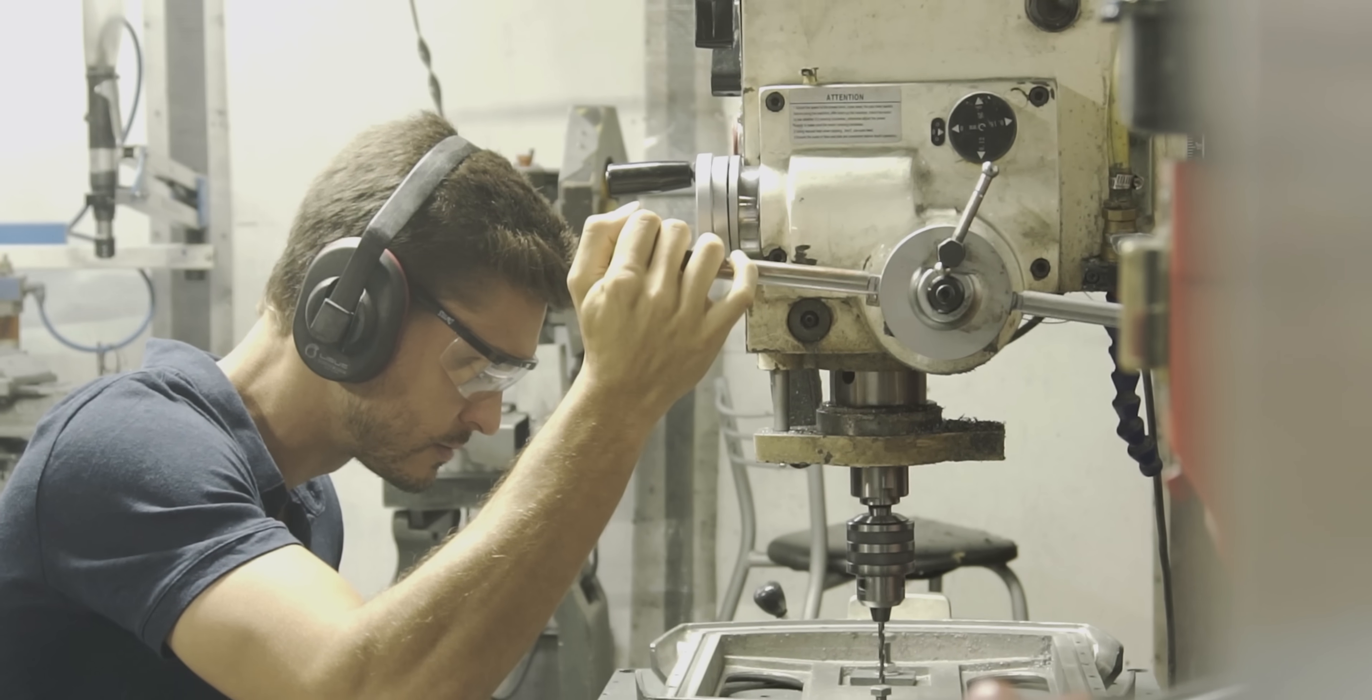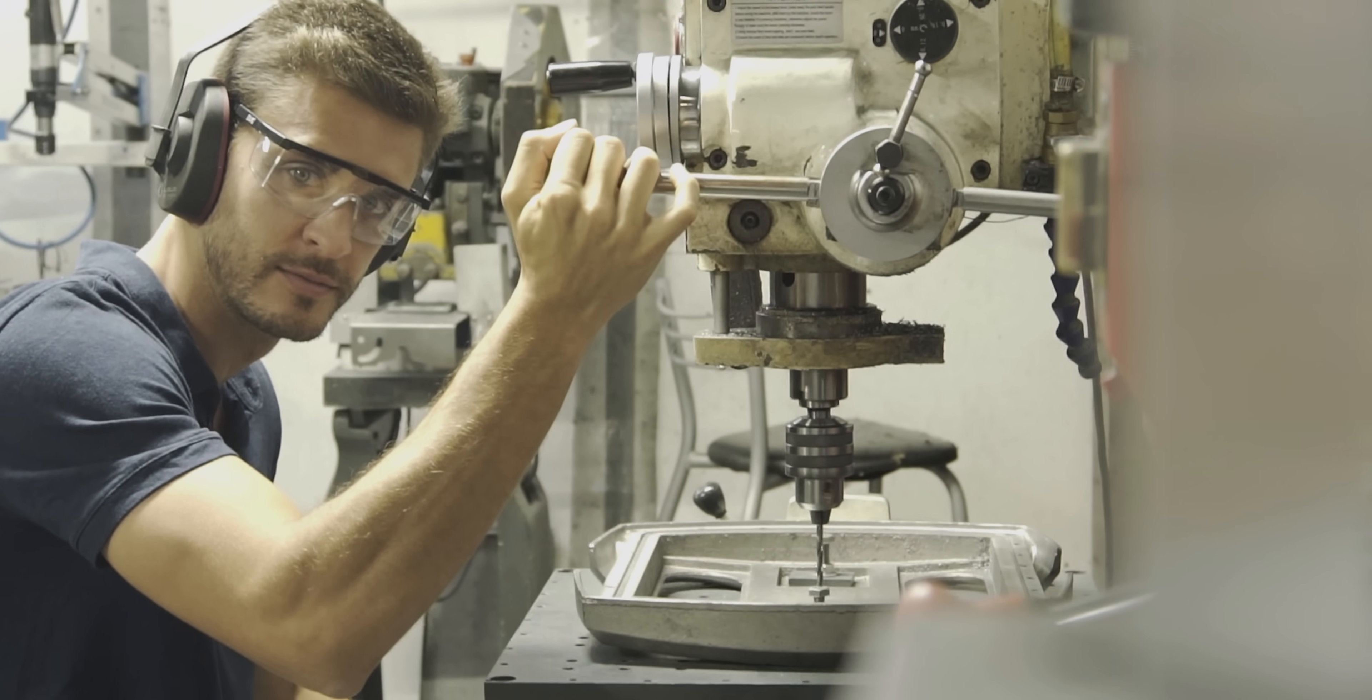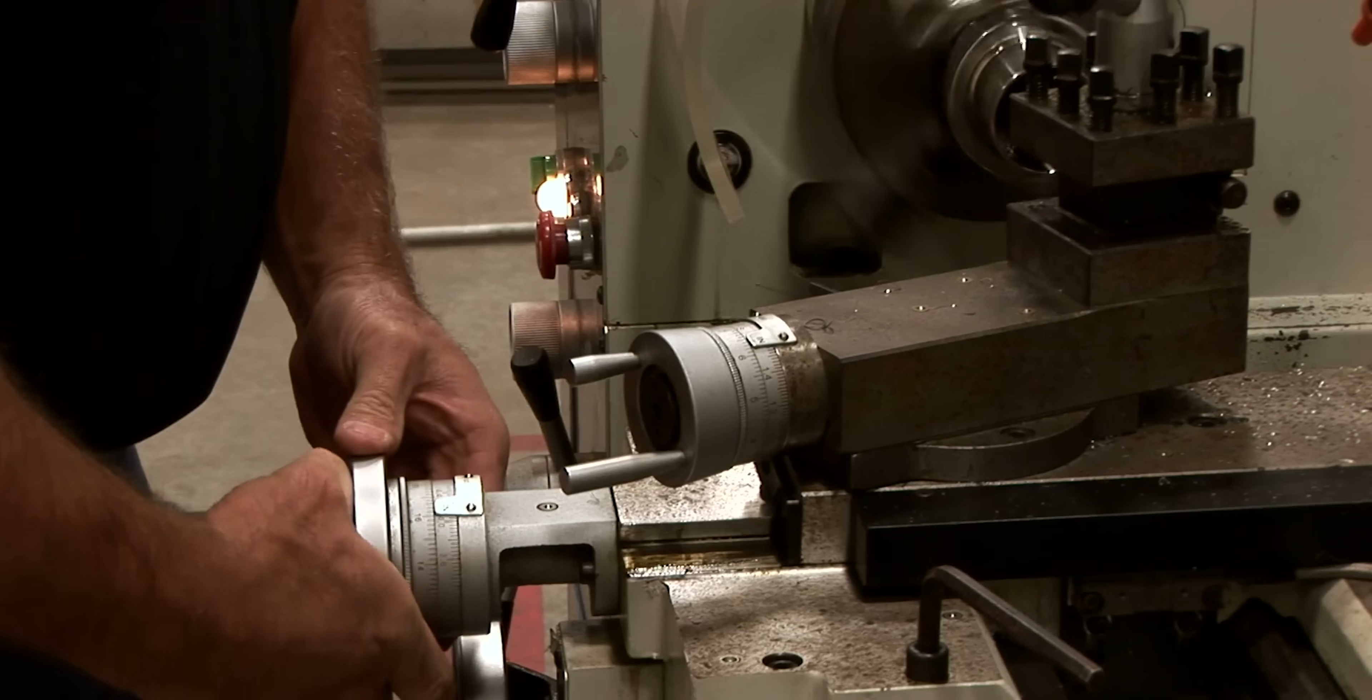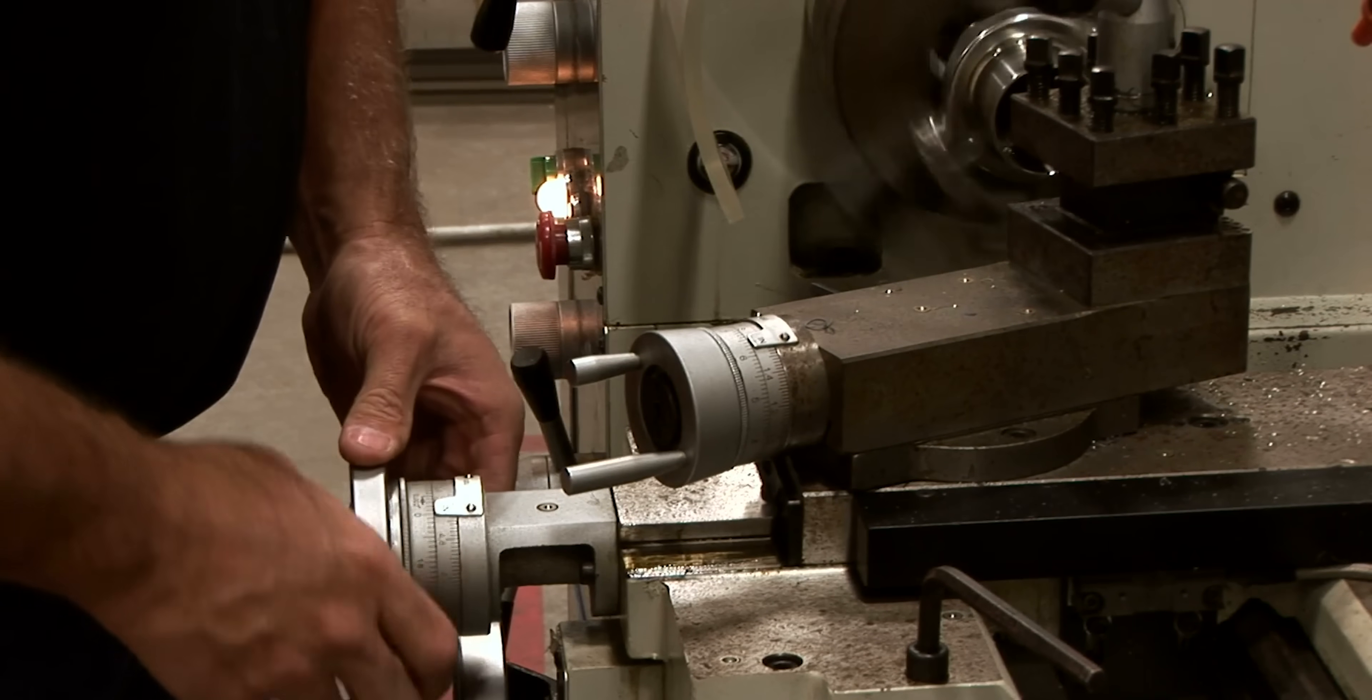Number 6, jewelry. Have you ever noticed that most machinists don't wear any jewelry? No watches, no necklaces, bracelets, earrings, or even wedding rings.